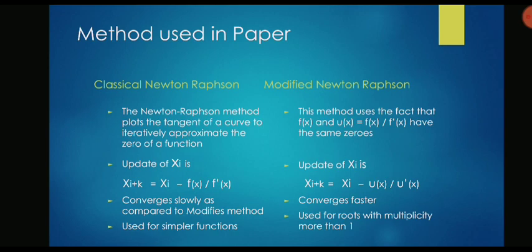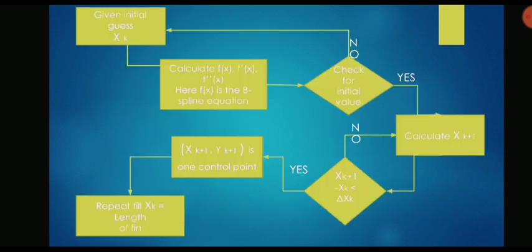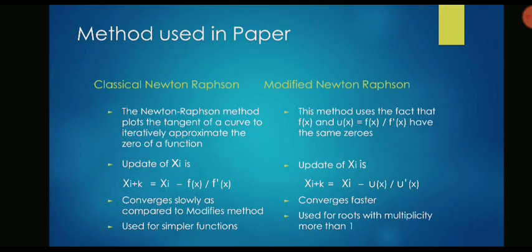For that actually the classical method of Newton-Raphson has not been used and the modified one is used in this paper. The difference between these two is that the update of Xi is Xi minus f(x) upon f'(x) where f(x) is our function representation. But the conversion of this classical Newton-Raphson method might not be always as fast as you want it to be.